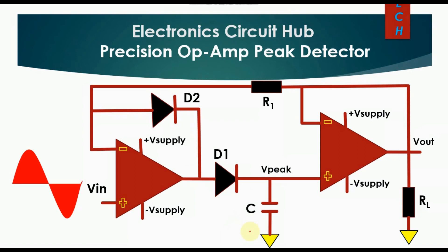To overcome this problem, we can use this modified op-amp peak detector circuit. Let us now understand the working of this circuit. At time t equals zero, there is no charge at the capacitor, so V-peak equals zero. The same output appears at V-out, which is also zero volts. Whenever you apply a positive half cycle — meaning VIN is greater than zero volts...